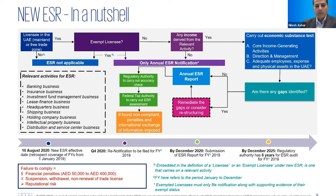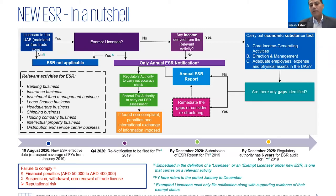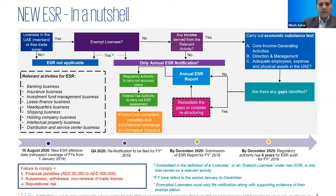By the end of December there is the report that needs to go in. The Federal Tax Authority has up to six years to perform an audit, so it's important that any report filed and any supporting documents are maintained for a period of six years. Failure to do that will attract penalties ranging between AED 50,000 and AED 400,000. In summary, this slide gives the audience a quick overview of how to navigate through the rules.